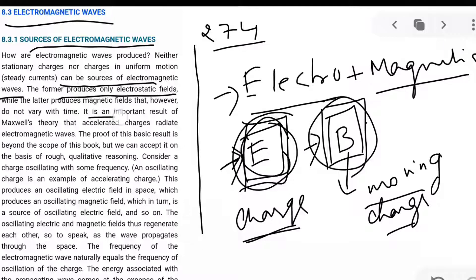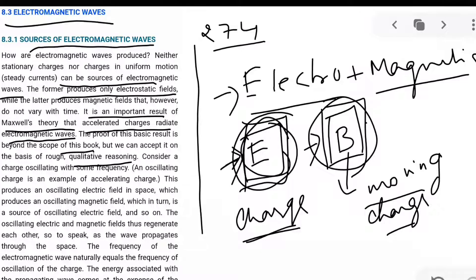An important result of Maxwell's theory is that accelerated charges radiate electromagnetic waves. When a charged particle is accelerated, it is going to radiate electromagnetic waves. The proof is beyond the scope of this book, but we can accept it on the basis of qualitative reasoning. Consider a charge oscillating with some frequency — an oscillating charge is an example of an accelerating charge, as in simple harmonic motion a particle undergoing oscillation has acceleration.